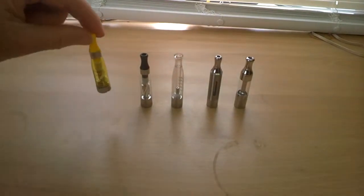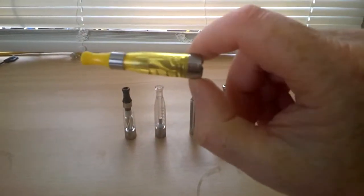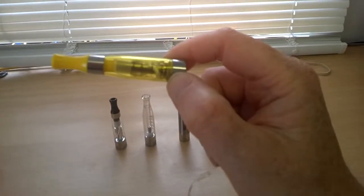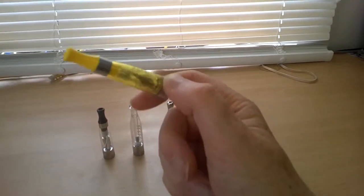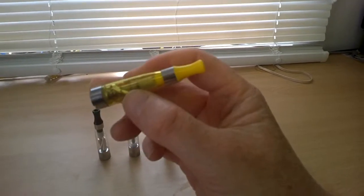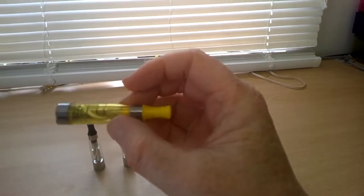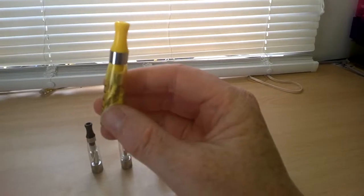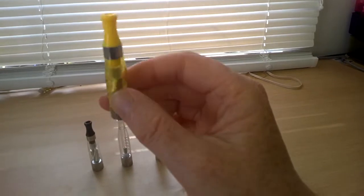So, the next one I'm going to show you is called the CE4 atomizer, now lots and lots of you will have seen these and used them and to be fair they were quite a revolution when they came out. You probably see a lot of these now on market stalls or internet auction sites where you can buy an electronic starter kit for like £9 and you charge the battery up three times and it's dead and you use the atomizer four times and you've got to throw it away.